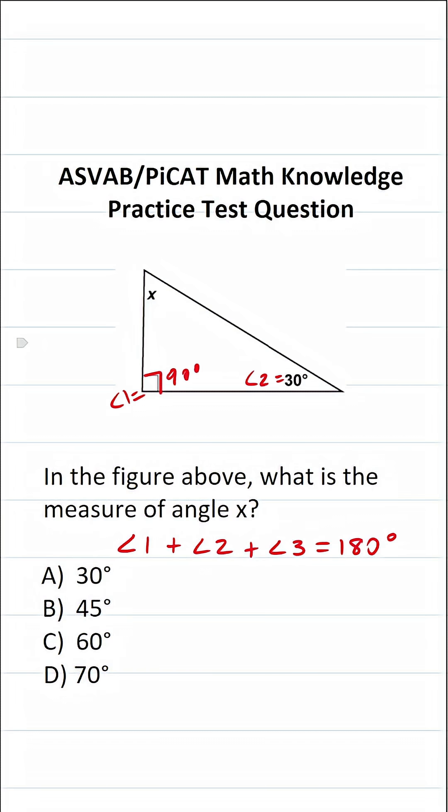The measure of angle 2 is going to be 30 degrees. And the measure of angle 3 is going to be x degrees. So let me go ahead and plug those values in.